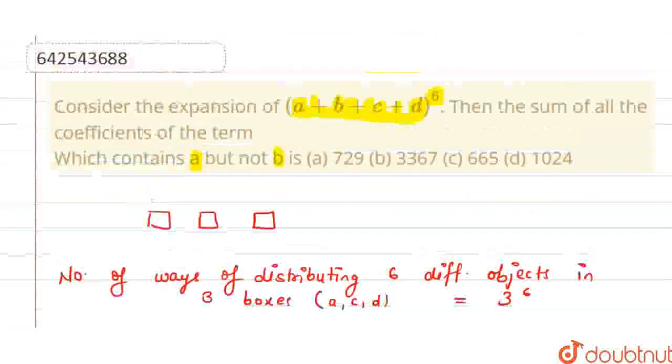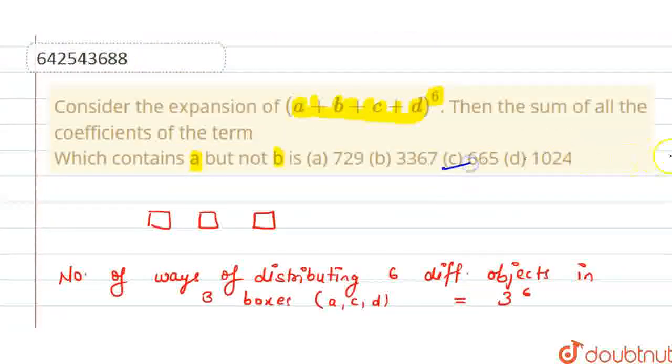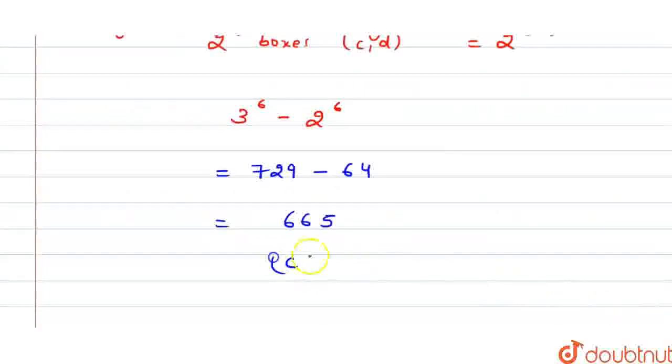So, let's check out the option. 665 is option C. So, what we have got? We have got that option C which is 665 is the correct answer for this question.